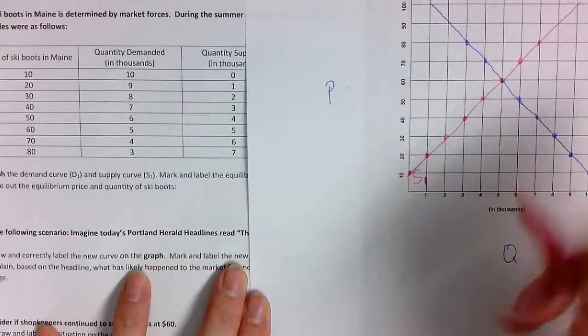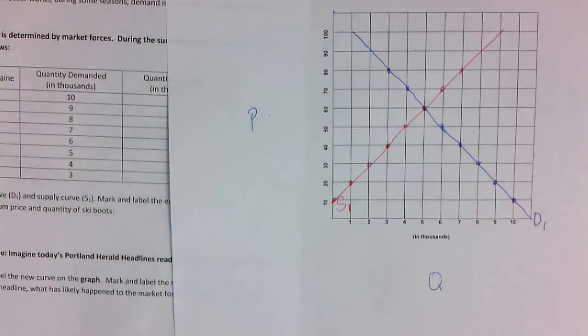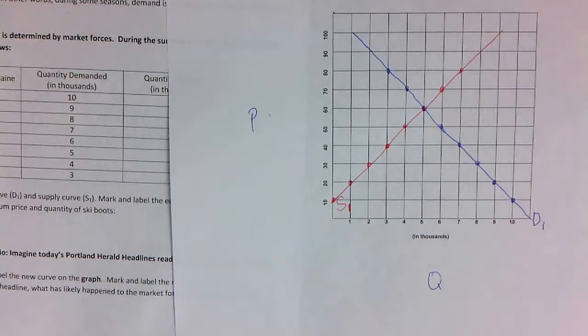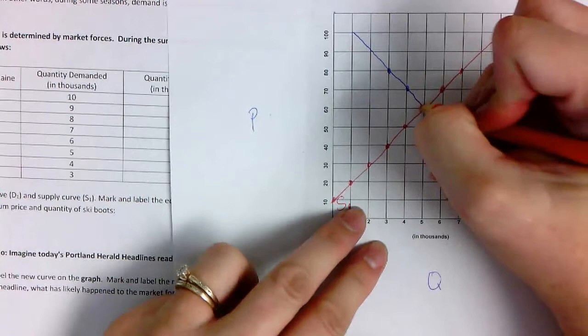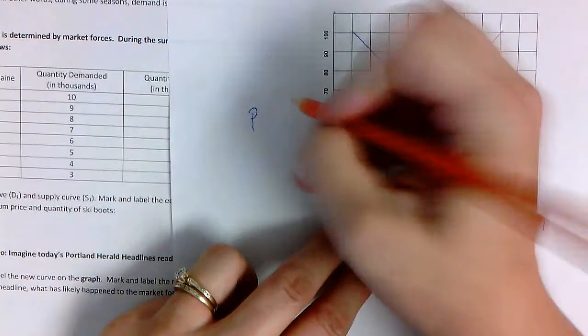So once you have that second curve, make sure that you put supply 1. Label it as a supply curve. But then you also need to plot equilibrium. This is essential, or you're going to get lost. So get a different color, and plot your equilibrium.